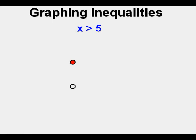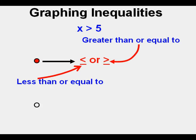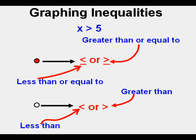In graphing solutions to equations on a number line we have points, but in graphing inequalities we have boundary points. The boundary point can be either a small open circle or a filled-in point. The filled-in circle corresponds to less than or equal to and greater than or equal to symbols. The small open circle means the inequality is less than or greater than.